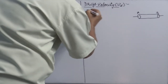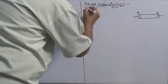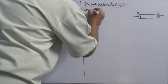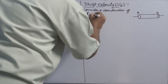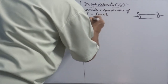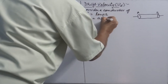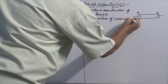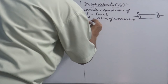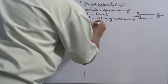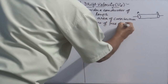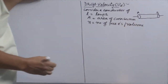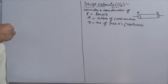We consider a few variables here. Consider a conductor of L as the length, A as the area of cross section, and N is the number of free electrons per unit volume — you can also call it electron charge density. These are the variables we have assumed.